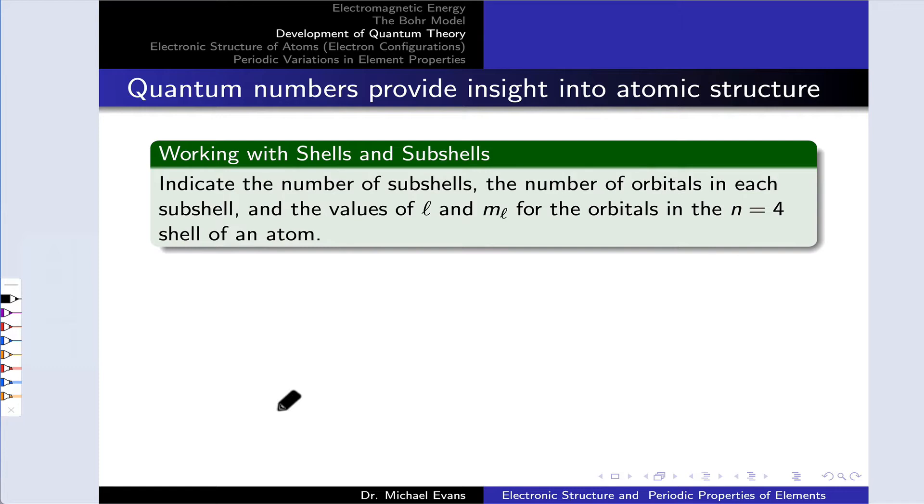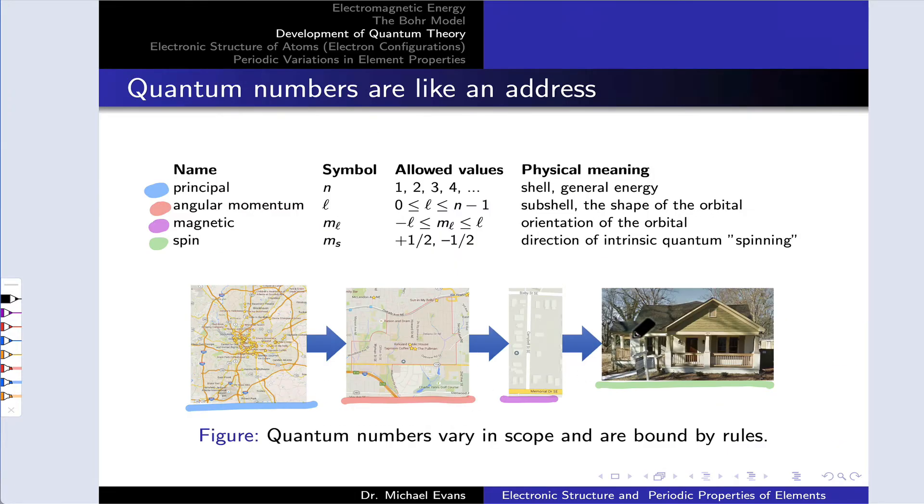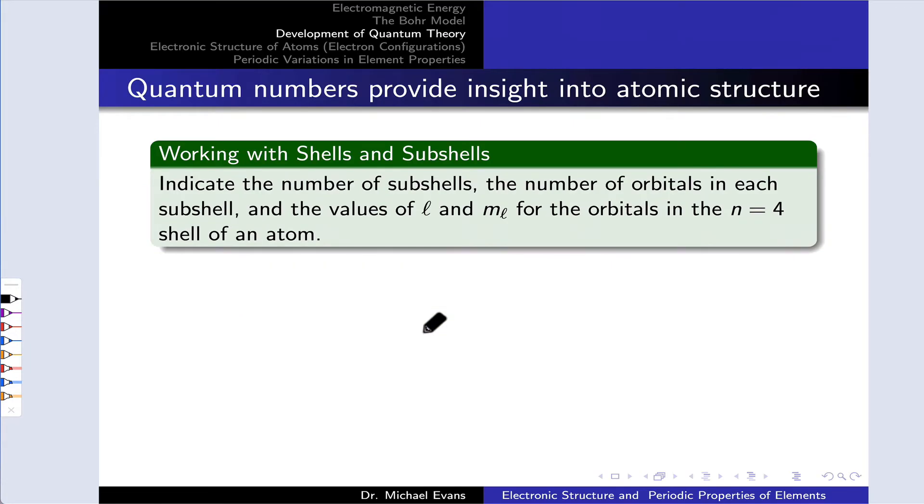but if we're familiar with the constraints or the rules for quantum numbers, we can build out this blueprint or scaffold for the electrons in the atom quite easily, and it all hinges on what we talked about in the last video, the rules for quantum numbers and the constraints on their allowed values. So the first thing to notice is we have the n equals 4 shell. n equals 4 corresponds to possible L values 0, 1, 2,